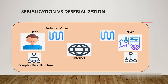So what is serialization and deserialization? In simple words, serialization is a process of converting a complex data structure on the client side, such as an object, into a byte stream that is easy to transfer from client side to server side on the wire. When this serialized object reaches the server, the deserialization process happens, which converts this serialized object back into its original form so that meaningful data can be extracted from the object and the server can respond to the client accordingly.